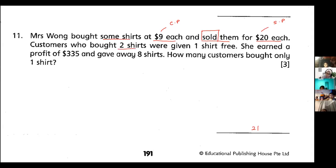Customers who bought two shirts were given one shirt for free. She earned a profit of $335 and she gave away eight shirts. This eight shirts is the free t-shirt. Because if a customer comes and buys two t-shirts, she will give one for free. Buy two, get one free. That kind of sale, okay?